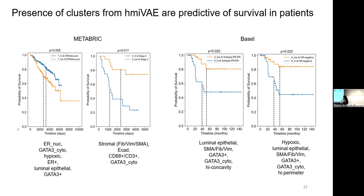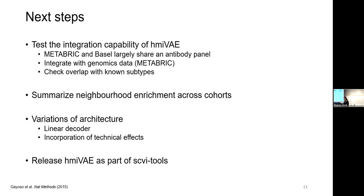So some next steps is to test the integration capability of hmiVAE. As I mentioned earlier, Metabric and Basel largely share a very similar antibody panel design. And so one thing to do is to train my model on one of the data sets and see how well it's able to find related clusters from the other data set.